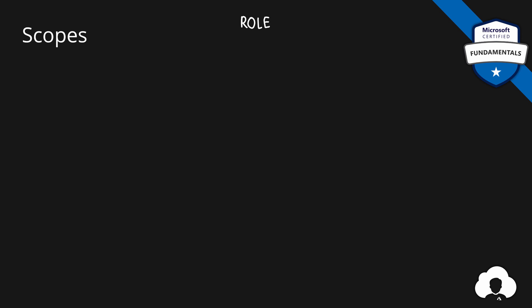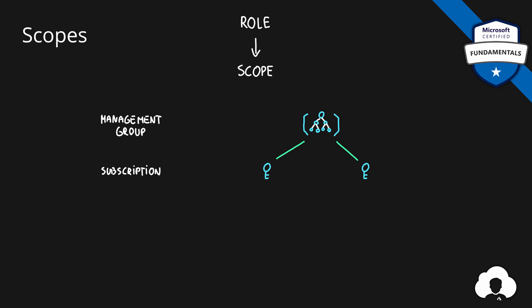Additionally, a role needs to be assigned to a scope — so where exactly can those actions be taken? Azure is organized in a hierarchy. The top-level object in Azure is called a management group, which allows you to group multiple subscriptions or multiple management groups. A subscription is a top-level billing object, and most of us will have a subscription as our top-level resource in Azure.